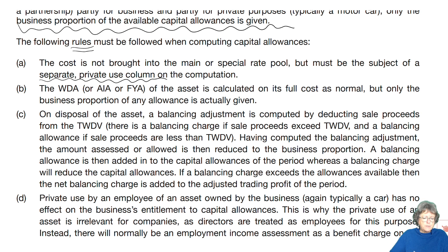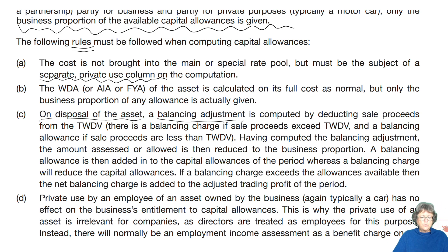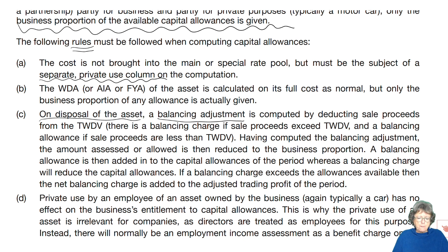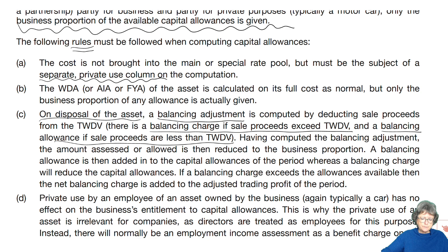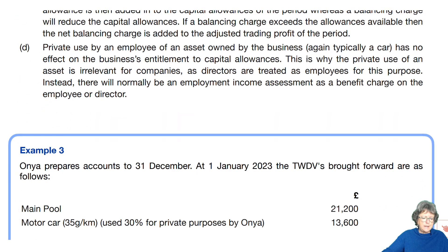On the disposal of an asset there is a balancing adjustment, using the lower of those two figures, and that's deducted from the tax written down value. You'll get a balancing charge if the proceeds exceed the tax written down value, and a balancing allowance if the sale proceeds are less than the tax written down value. You will then have to work out the private proportion.